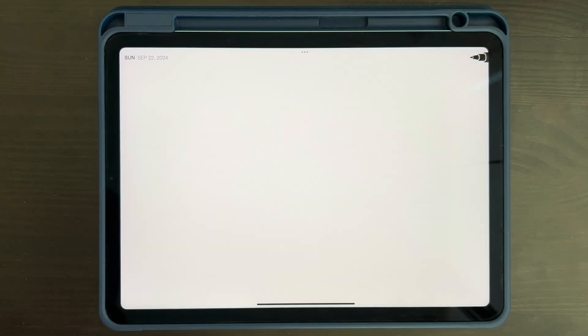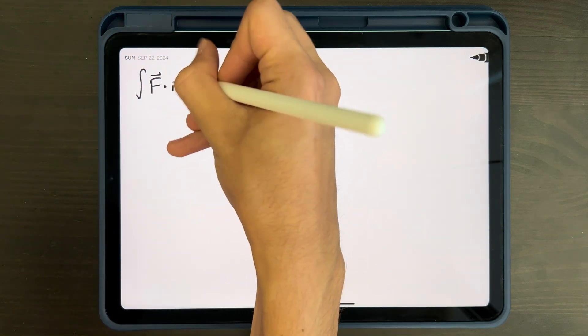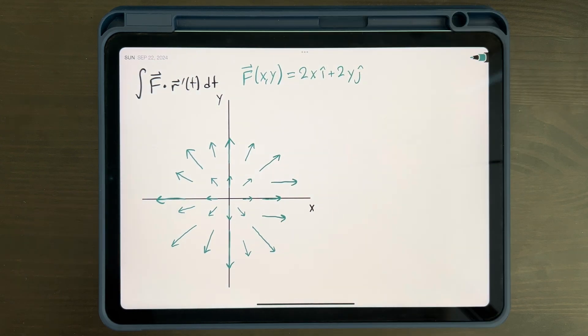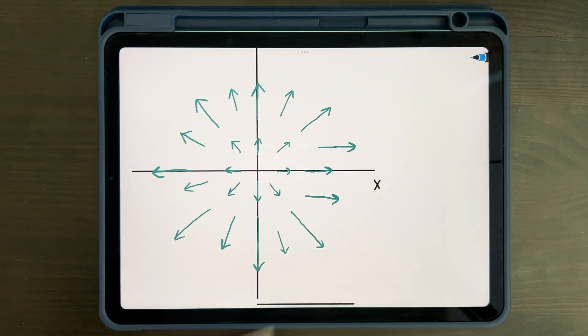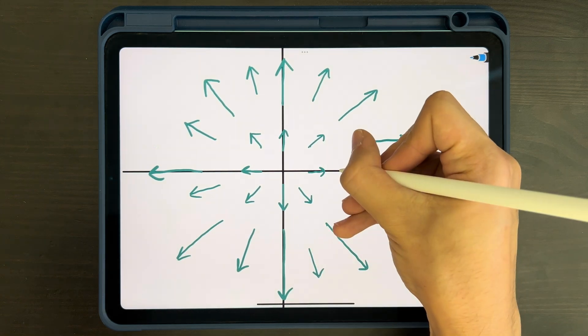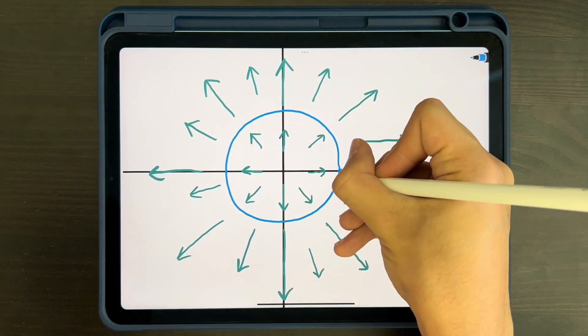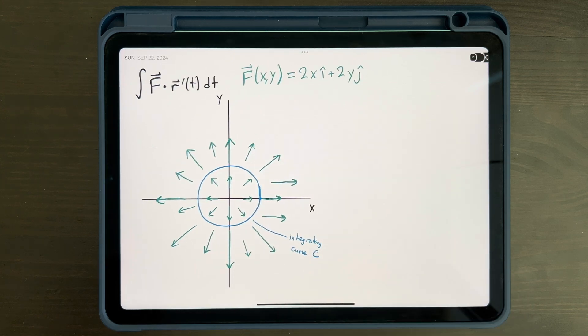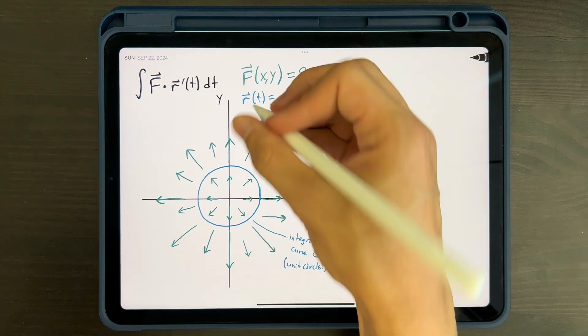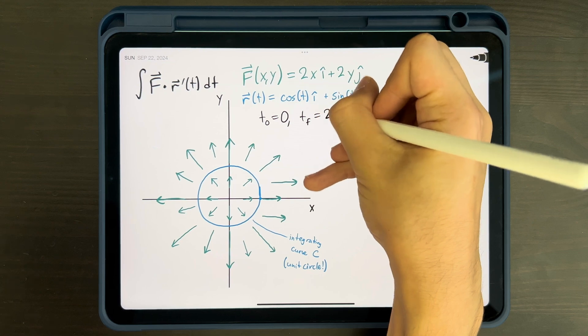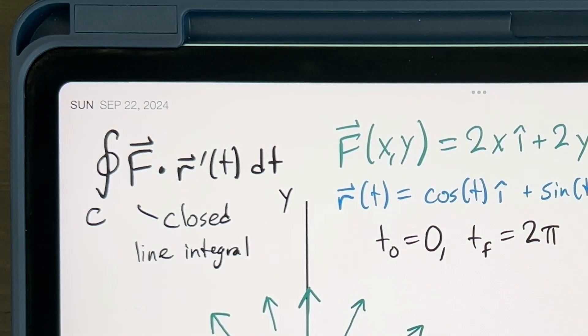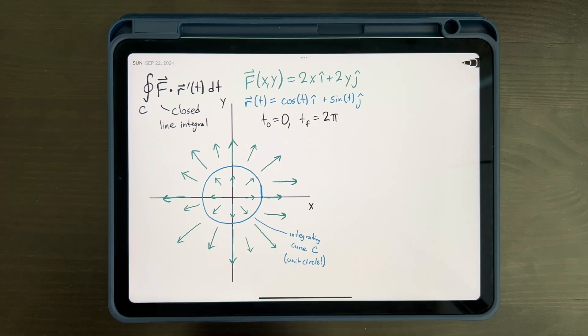Instead of immediately spoiling it for you, let's build up to it. Consider a line integral over the 2D vector field, f of x comma y equals 2x i hat plus 2y j hat. Let's draw an integrating curve. This time, let's make it so that the curve starts and ends at the same point. Let's use a circle of radius 1, going in the counterclockwise direction for our curve. We can parameterize this as r of t equals cosine t i hat plus sine t j hat. It's just the unit circle. Our starting point would be at t equals 0, and our ending point would be at t equals 2 pi. As a side note, we would call this a closed line integral, and denote it with this little circle on the integration symbol. So, let's calculate it.